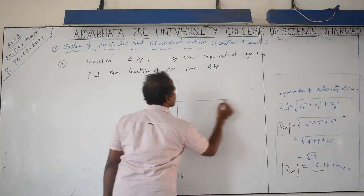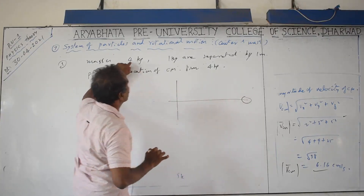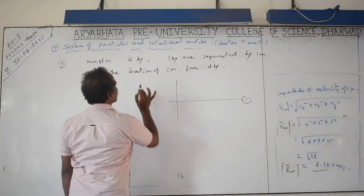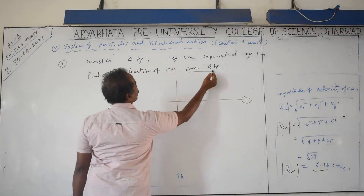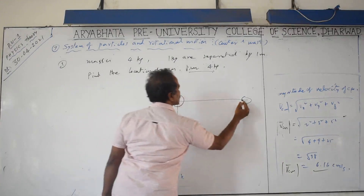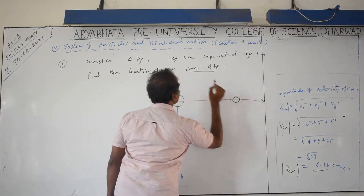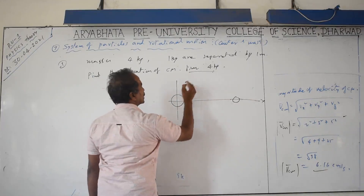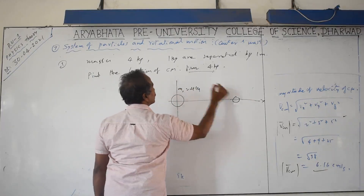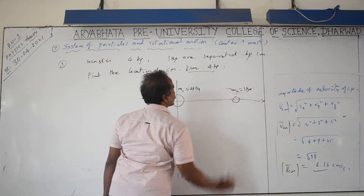Since the problem asks for distance from the 4 kg mass, place that at the origin on the x-axis. So m1 = 4 kg is at the origin and m2 = 1 kg is at x2 = 1 meter. The center of mass is closer to the larger mass. When the first object is at the origin, its coordinate becomes zero, simplifying the formula.